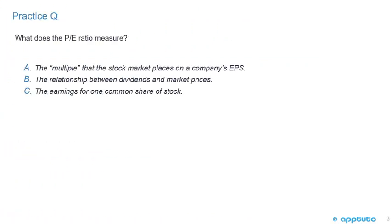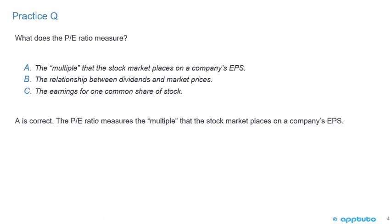Practice question: What does the P/E ratio measure? A — the multiple that the stock market places on a company's EPS. B — the relationship between dividends and market prices. Or C — the earnings for one common share of stock. Answer: A is correct. The P/E ratio measures the multiple that the stock market places on a company's earnings per share.